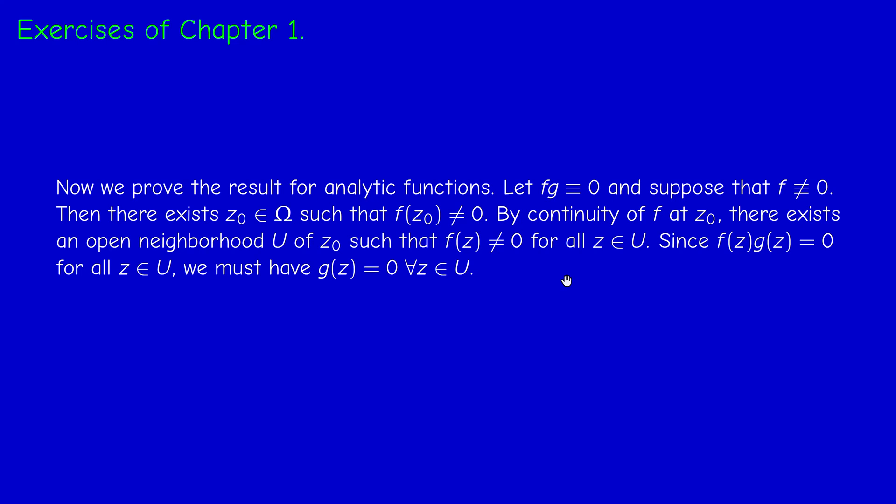Now, the principle of analytic continuation, because G is analytic, implies that G vanishes on omega because omega is connected. And that's it. This is the result.